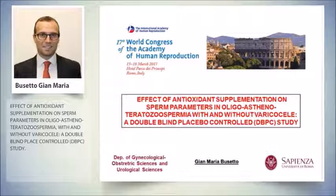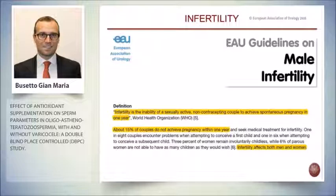Good afternoon and welcome to all of you. I would like to thank the moderator and Sigma Tau for this opportunity. I would like to start with this first slide because we are in a room full of gynecologists — there are no urologists. I want to stress that infertility is a problem that regards the couple, not only women and not only men. About 15% of couples suffer from problems with pregnancy. Infertility is defined by the WHO as the inability of a sexually active, non-contraceptive couple to achieve spontaneous pregnancy within one year.